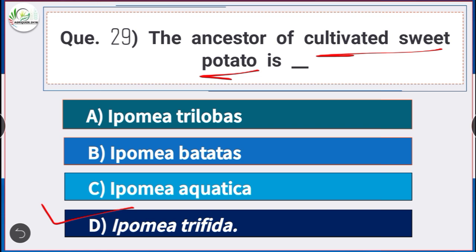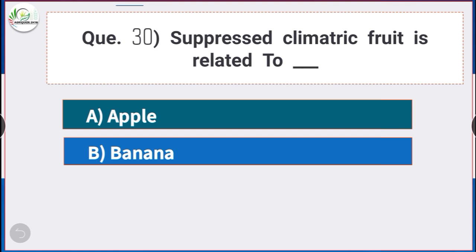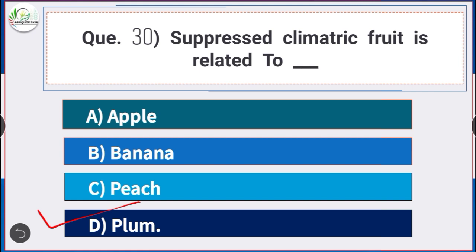Question number 30: Suppressed climacteric fruit is related to — answer option D — plum. Suppressed climacteric fruit is related to plum.